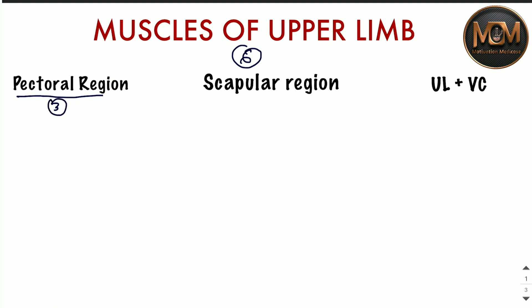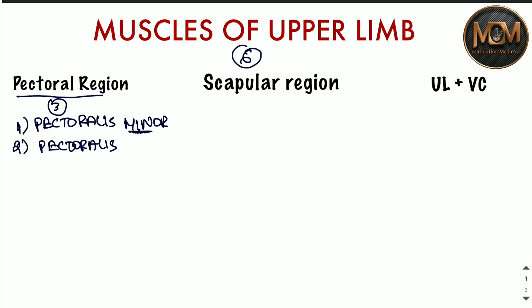The first part is the pectoral region, and we have three muscles to study here. The first one is pectoralis minor, the second one is pectoralis major, and the third one is subclavius. So in the pectoral region we have three muscles: pectoralis minor, pectoralis major, and subclavius.